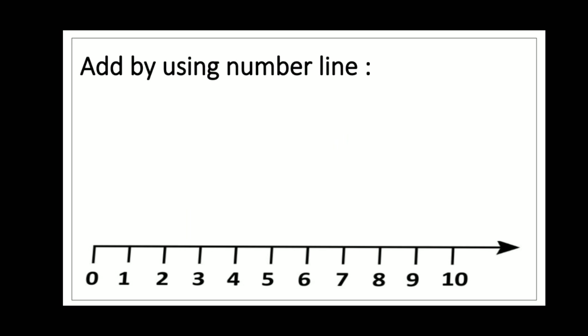It's done for three plus one by using number line. We will start from three and add one after three. The answer will be four. So three plus one is equal to four.